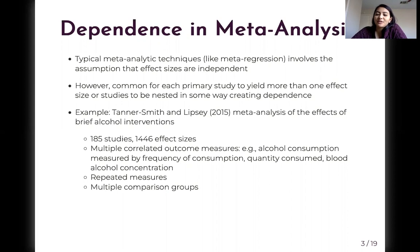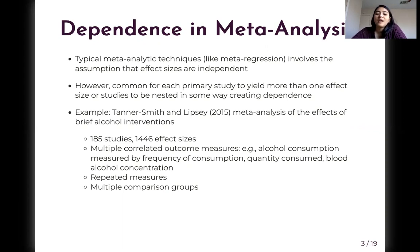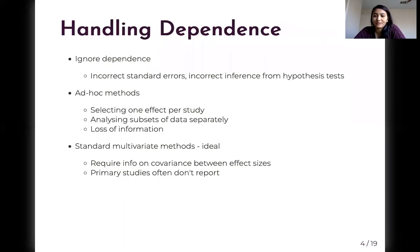For example, Tanner Smith and Lipsey 2015 is a meta-analysis examining the effects of brief alcohol interventions. It consisted of 185 studies and 1,446 effect sizes. The meta-analysis included primary studies with multiple correlated outcome measures — for example, alcohol consumption was measured by frequency of consumption, quantity consumed, and blood alcohol concentration. Studies also included repeated measures and multiple comparison groups, creating a correlated effects data structure.